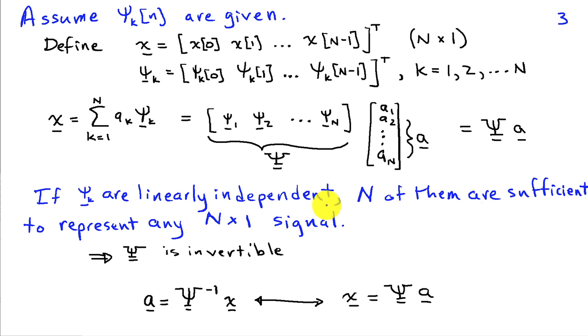Well, if these psi k are linearly independent, that means that each psi k brings some new information about the signal that's not represented in the existing set of psi k. Then N of them are sufficient to represent any signal because this x is N-dimensional, so N components will represent any signal. And the linear independence also implies that this matrix psi is an invertible matrix. It's an N-by-N matrix, and it's full rank, so it'll be invertible.